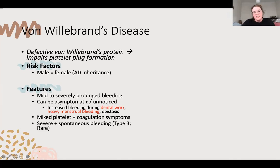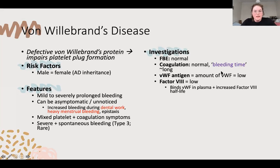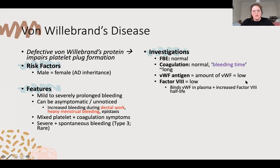In the rare type three, you can have severe spontaneous bleeding; type one being least bad, type two medium. Investigations: FBE normal, coagulation largely normal except for a prolonged bleeding time - you nick the patient and count how long they bleed, which can be a little long because it's that first step. Von Willebrand's factor is low, and factor eight can be low as well because they work together.